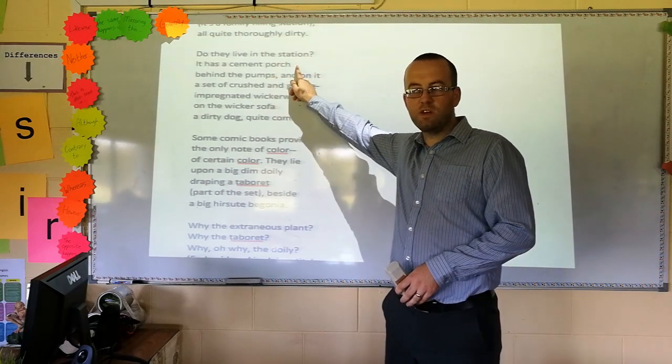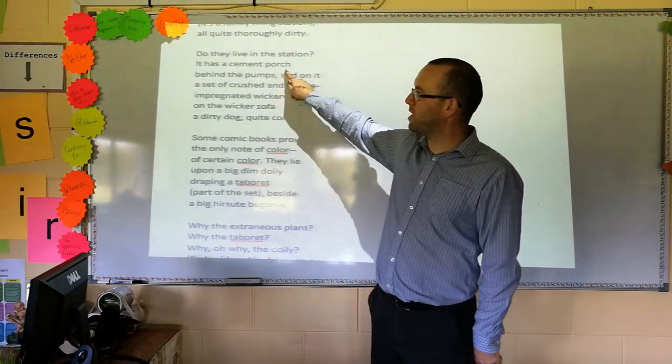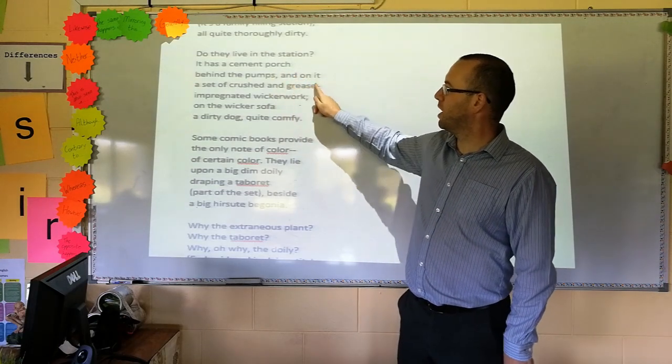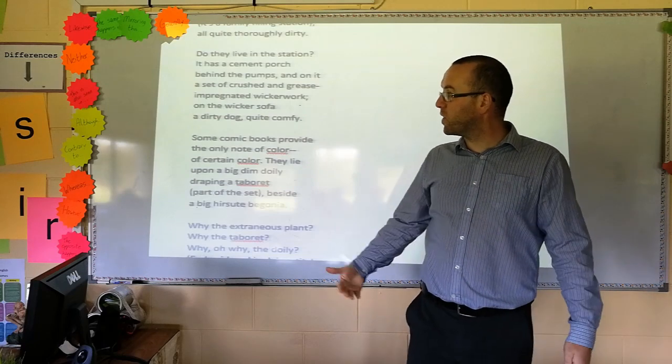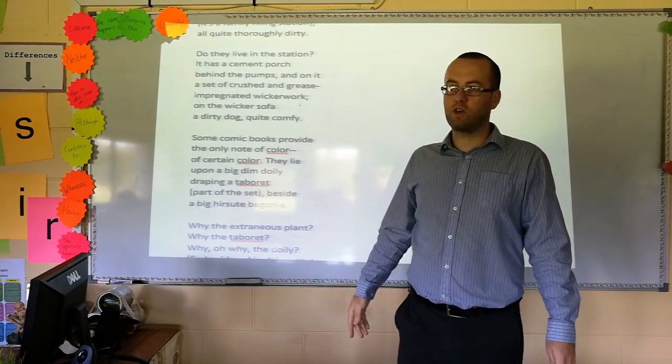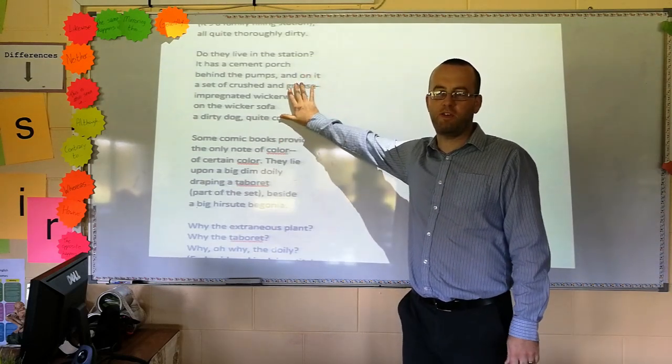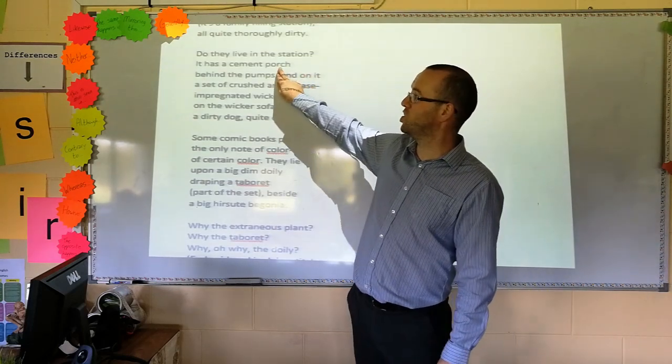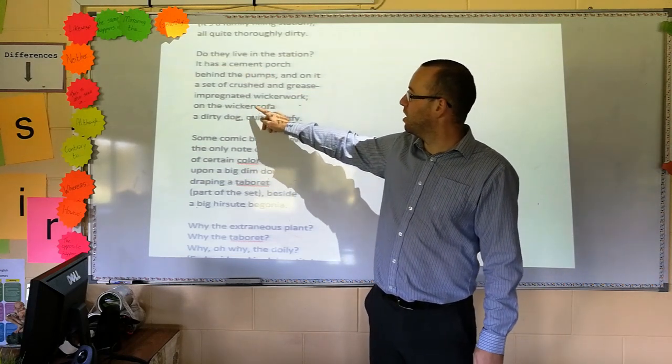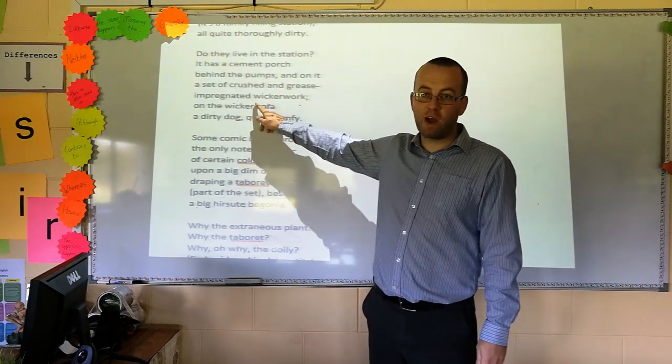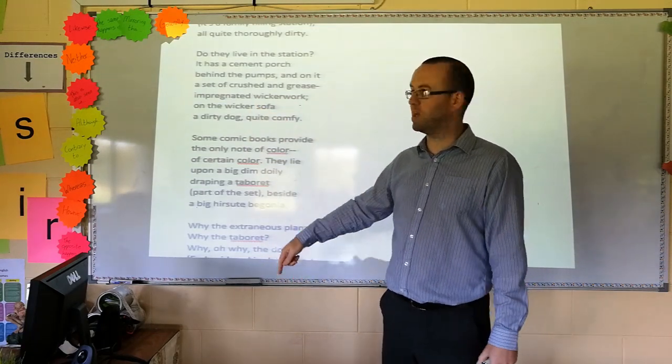Do they live in the station? She's watching the people work. She says, it has a cement porch behind the pumps and on it a set of crushed and grease impregnated wickerwork on the wicker sofa. A dirty dog, quite comfy. So again, loads more description. She's describing maybe some of the more homely aspects to this petrol station. It does have a porch, albeit cement. It does have some kind of a sofa, albeit a crushed and grease impregnated one. So still, this motif of this petrol station being absolutely filthy comes up again and again.